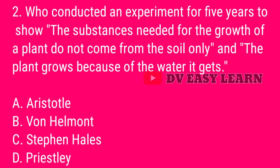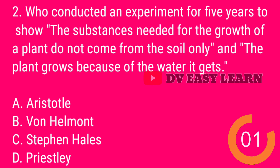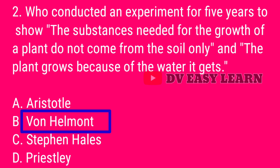Question number 2. Who conducted an experiment for 5 years to show the substances needed for growth of a plant do not come from the soil only, and the plant grows because of the water it gets? Correct answer: Van Helmont.